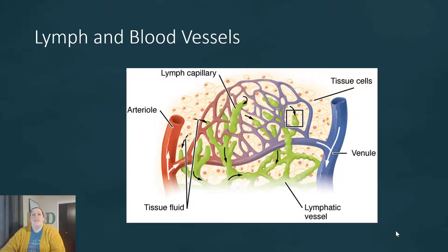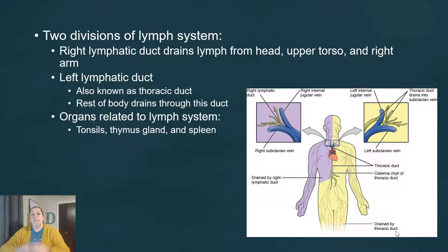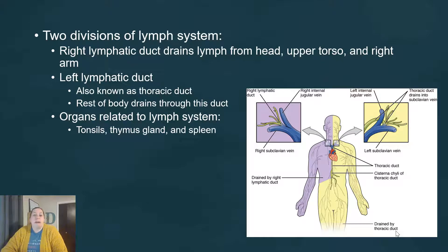You can see them shown here in green. Now there are two divisions with the lymphatic system. We see that there's the right lymphatic duct — this drains the lymph from your head, your upper torso, and your right arm, and it's going to drain it back into the subclavian on that right side. The left lymphatic duct is also known as the thoracic duct, and it's going to have all the fluids from the rest of the body drain through that duct into the left subclavian vein.